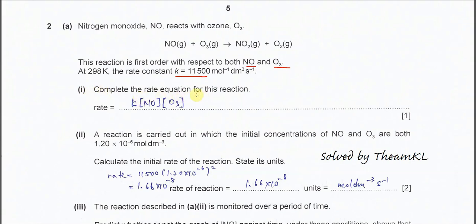This one is very easy. We just need to consider the reactants. We have two reactants: NO and O₃. Because it is first order for both, the power is 1, so it is not shown explicitly. Therefore, you just need to write: rate = k[NO][O₃]. So this one is very easy.